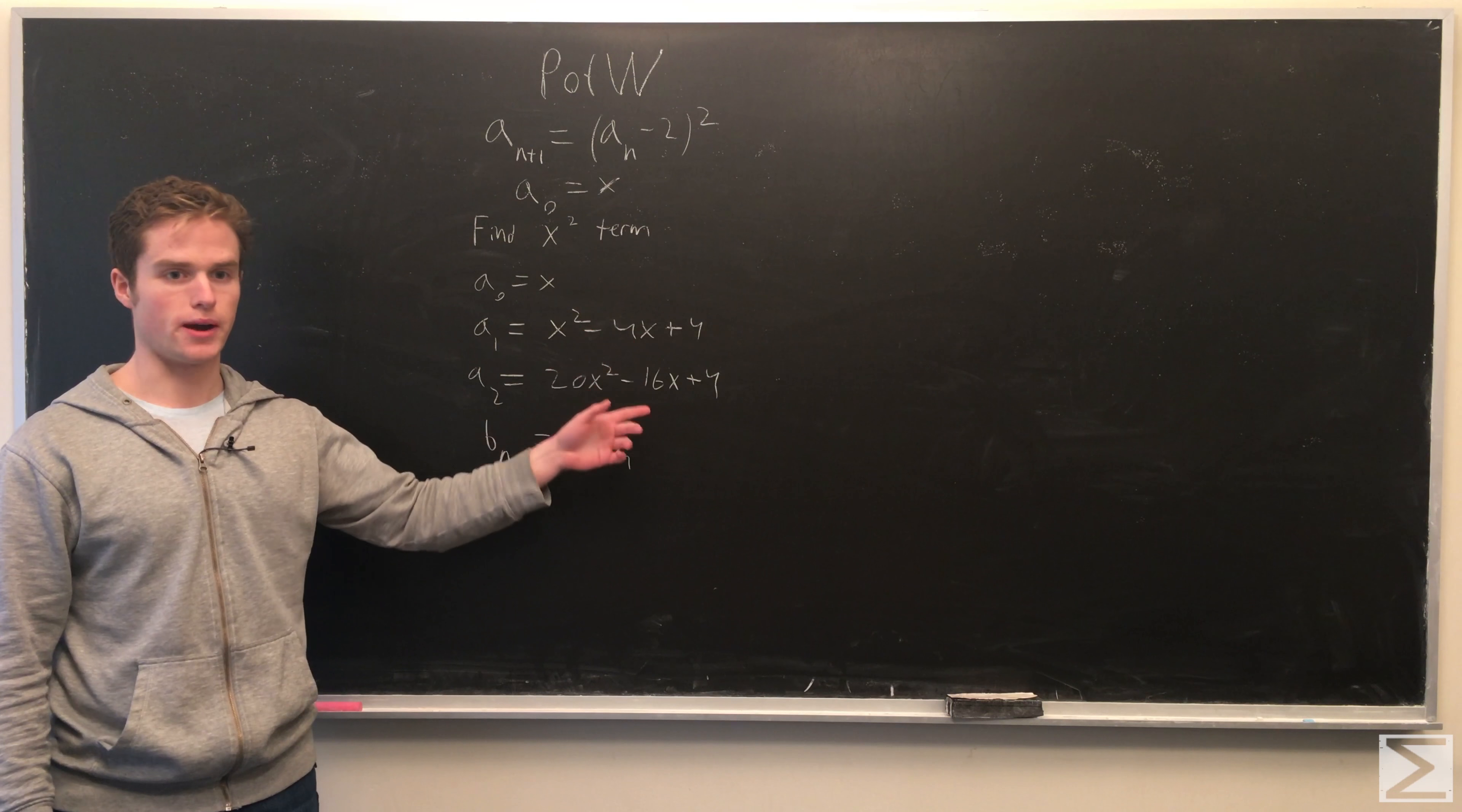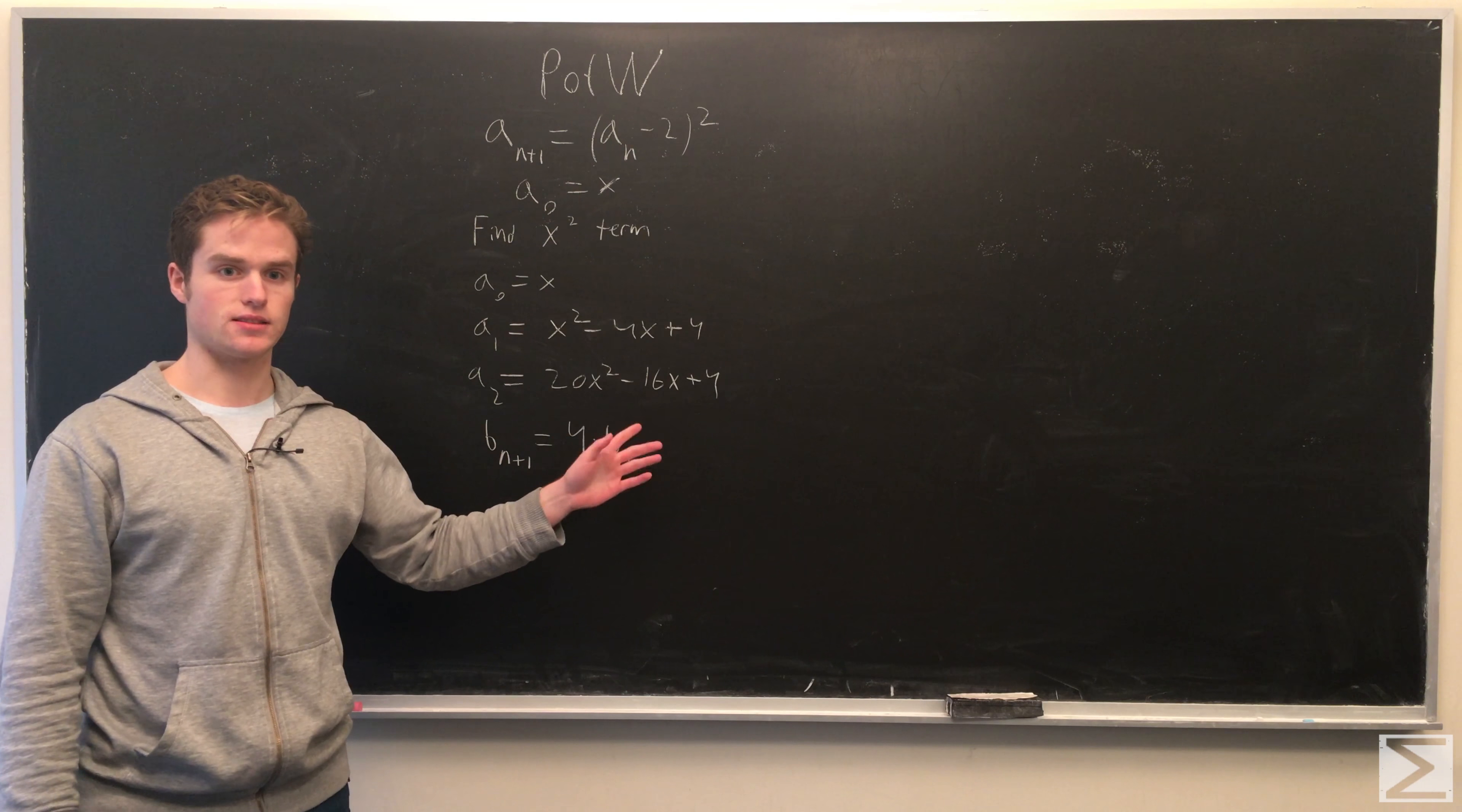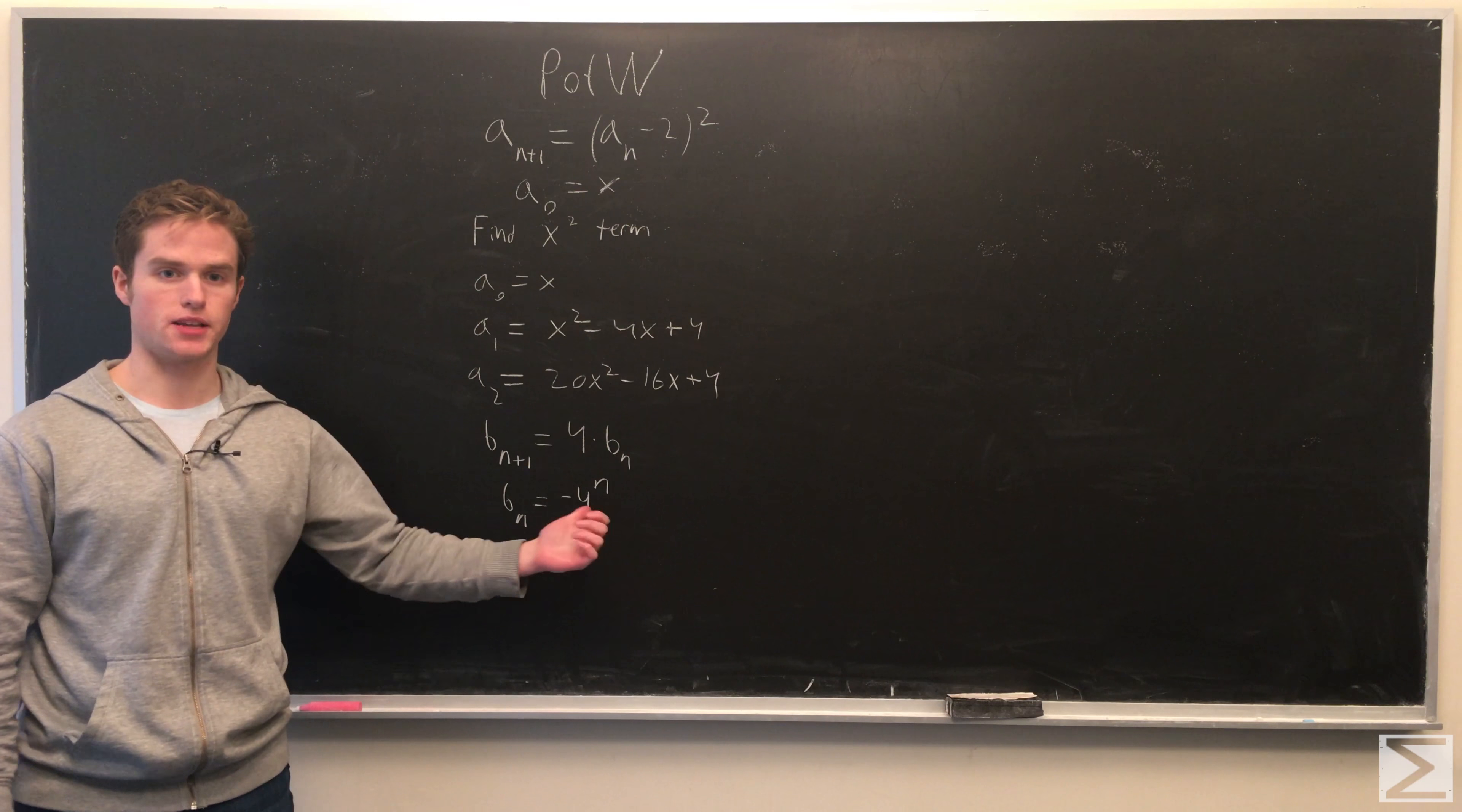So, it's going to go minus 4, minus 16, minus 64, etc. And so, we can write this explicitly as bn equals minus 4 to the n.